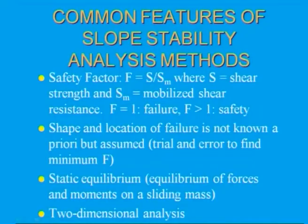Last class we discussed slope stability analysis, different methods, and factor of safety. If factor of safety is equal to 1, the slope is said to be at failure. If factor of safety is greater than 1, we can say that the slope is safe.